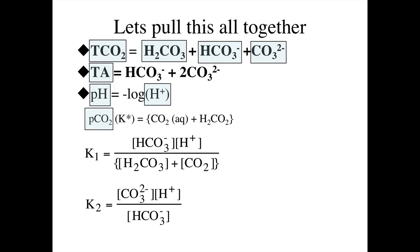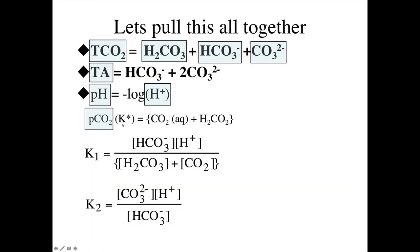Let's pull all of this together in a systematic treatment of equilibria. We have the mass balance — total CO2 equals carbonic acid plus bicarbonate plus carbonate — the charge balance — total alkalinity equals one times bicarbonate plus two times carbonate — pH equals the negative log of the H+ concentration, the CO2 relation through the Henry's Law constant, and the K1 and K2 expressions.